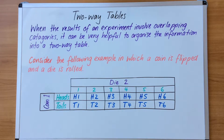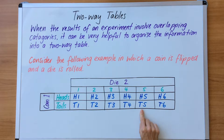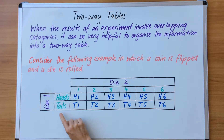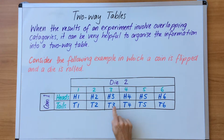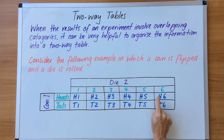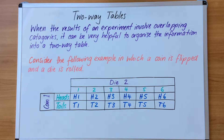Because there are 12 outcomes listed in the table, the probability of getting a tail combined with a five, for example, is one over twelve. Whatever probability questions you get, you need to find how many outcomes fit that category, and it will be over twelve because there are twelve outcomes.